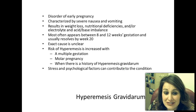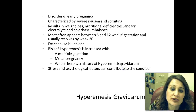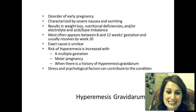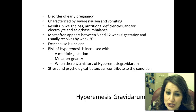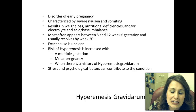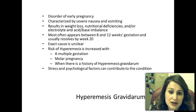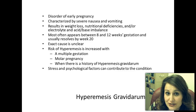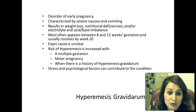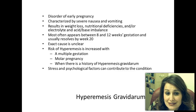Hyperemesis gravidarum is a disorder of early pregnancy that usually appears between 8 and 12 weeks gestation and is usually resolved by the 20th week. It is characterized by severe nausea and vomiting—much more severe than just morning sickness—often resulting in weight loss, nutritional deficiencies, electrolyte imbalances, and acid-base imbalances.